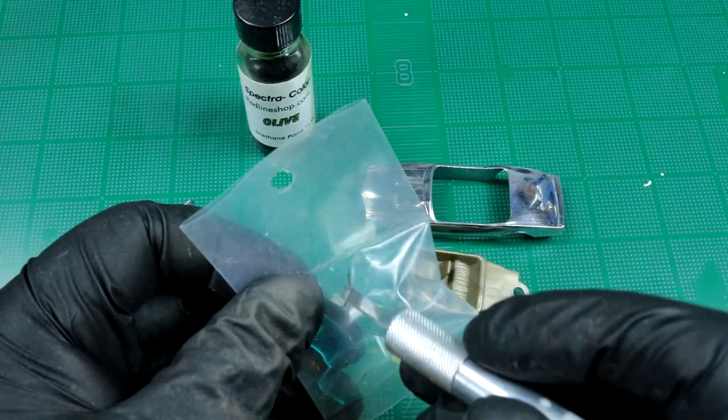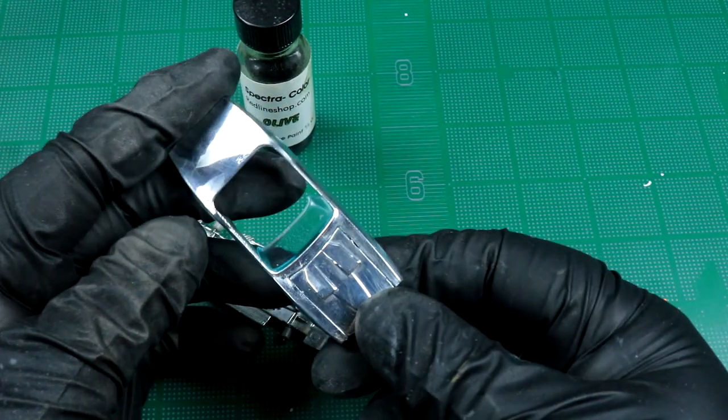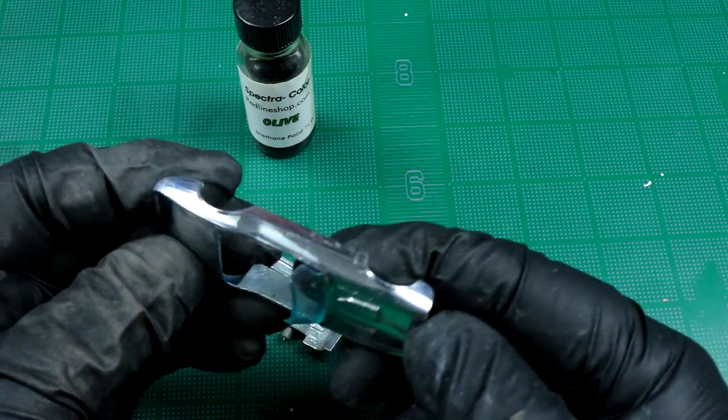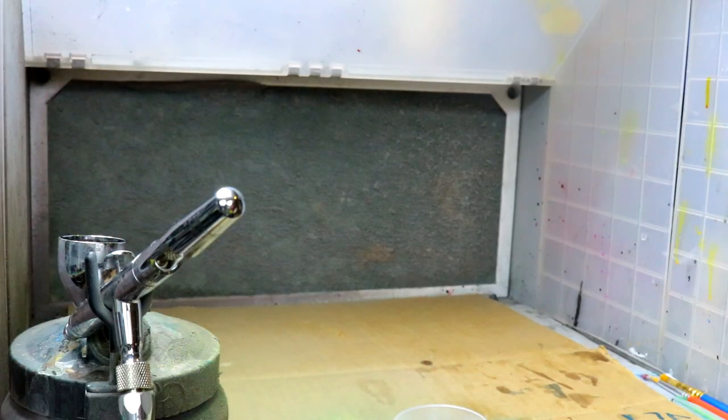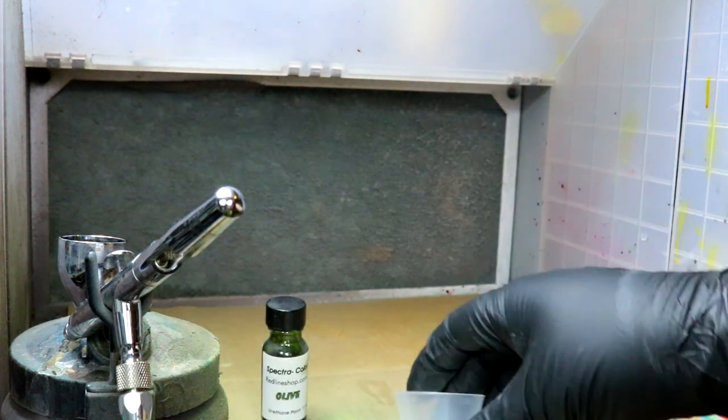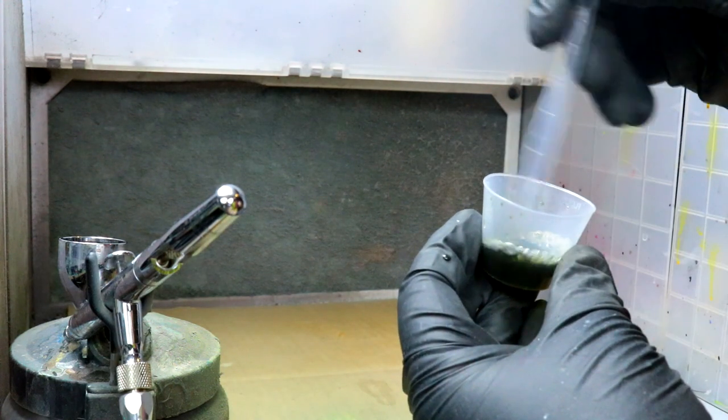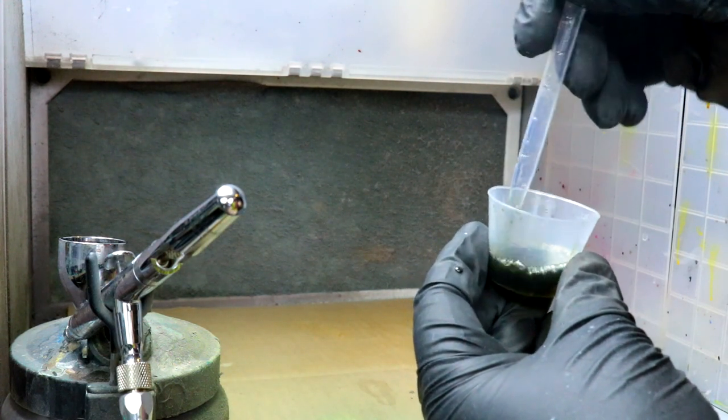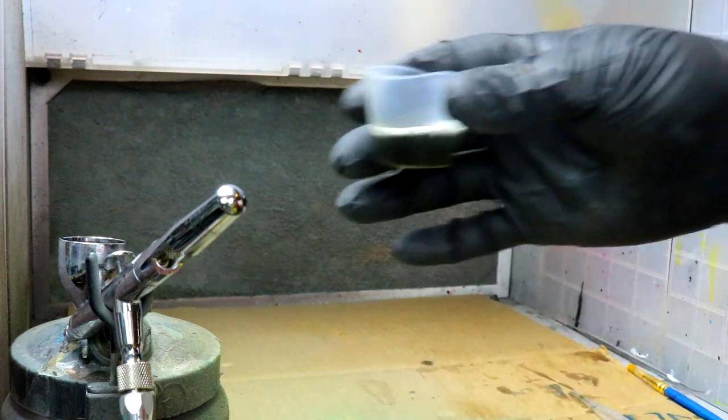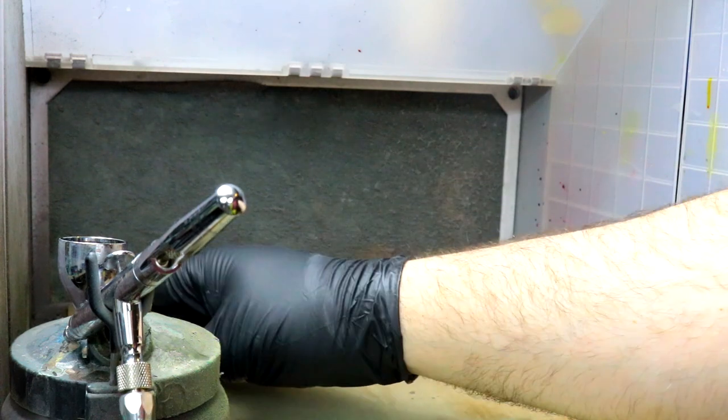Just see how this windshield fits while we're here and surprisingly it fits pretty good. So yeah I'm going to meet you in the spray booth. Alright so the first thing we're going to do is just mix up some regular automotive 2K urethane clear coat and we're going to add our olive to our regular clear coat. I guess you know, bottoms up. I'm going to wear a mask, this stuff's pretty nasty.